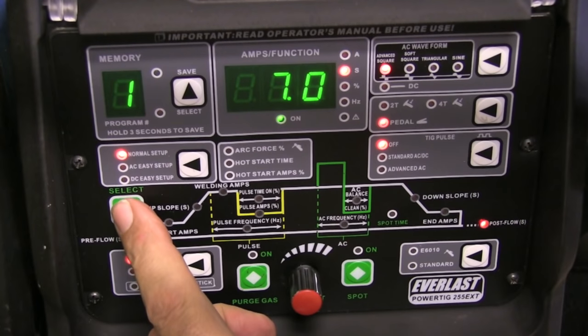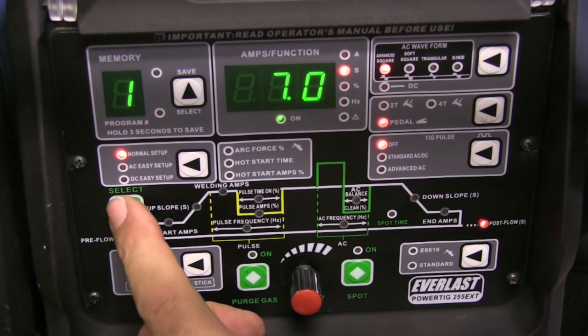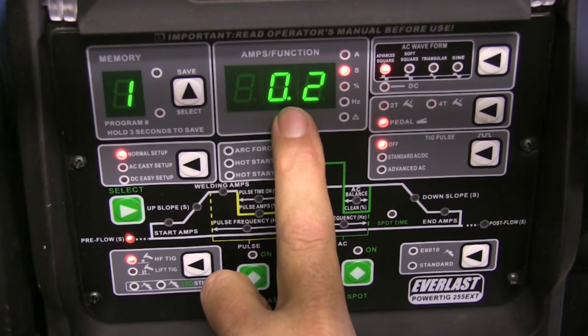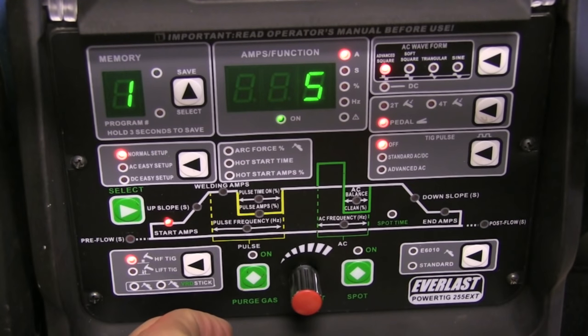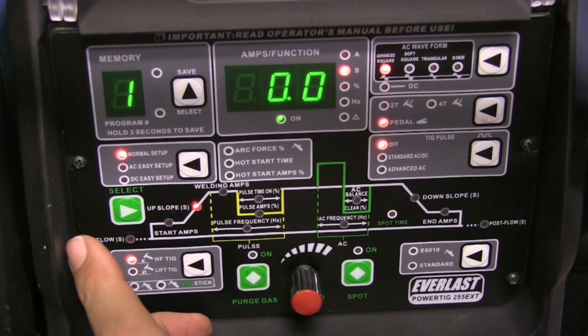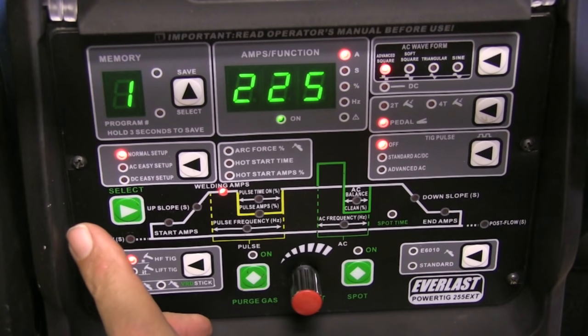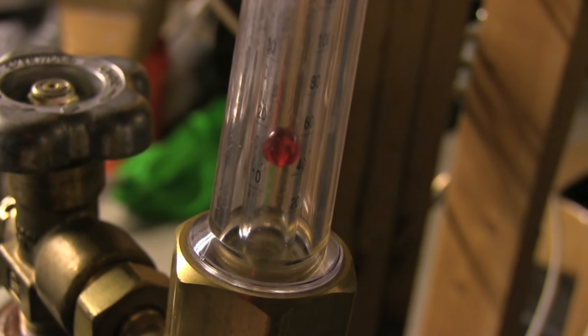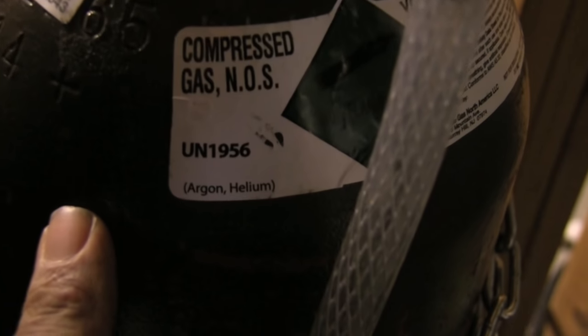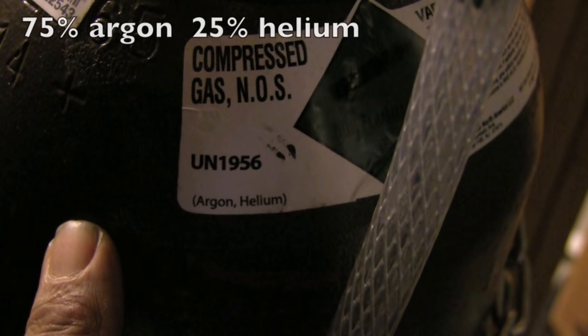No down slope, seven seconds of post flow just enough to keep my electrode clean, 0.2 seconds of pre flow and my start amps at five which was a little bit low and you could hear the arc stutter a little bit, got a little bit better when I changed it up to around 25 amps on start.